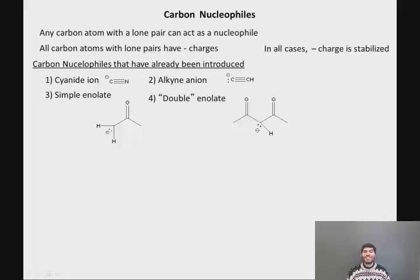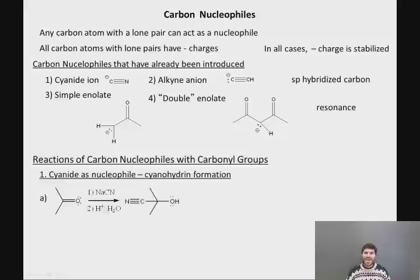So in all four of these cases, the minus charge is somehow stabilized. So in the case of cyanide and the alkyne anion, the minus charge is stabilized by being on an sp hybridized carbon and therefore being in an orbital that is closer to the positively charged nucleus. In the case of the enolates, what stabilizes the minus charge is resonance. Okay, there's another resonance structure where you can put the negative charge onto the oxygen. And in the case of the double enolate, there are two resonance structures where you can put the negative charge onto each of the two oxygens.